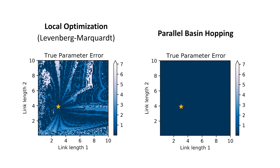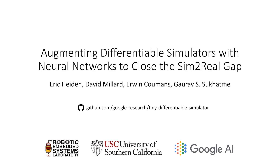To overcome poor local optima and exploit available computer hardware, we use a parallel basin-hopping optimization strategy. Please view our open-source code at the available GitHub link. Thank you.